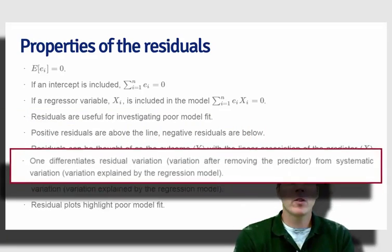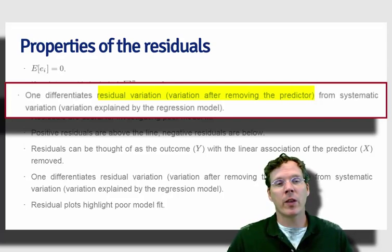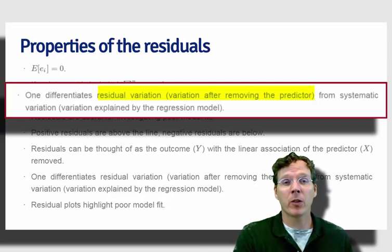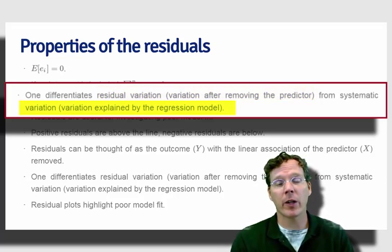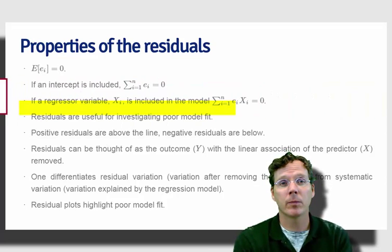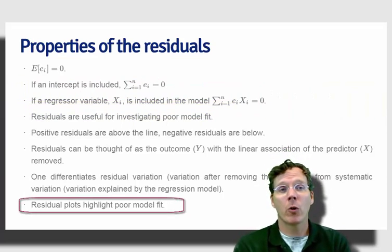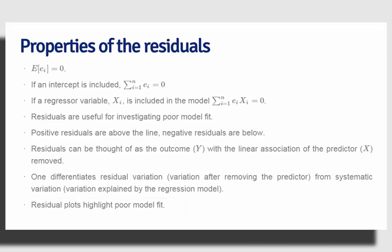So one should differentiate between residual variation—which is variation that is left over after the explanatory variable has been accounted for in a linear fashion—from systematic variation, which is variation as explained by the regression model. Residual plots can highlight poor model fit, and we're going to go through some residual plots here in just a couple of slides.